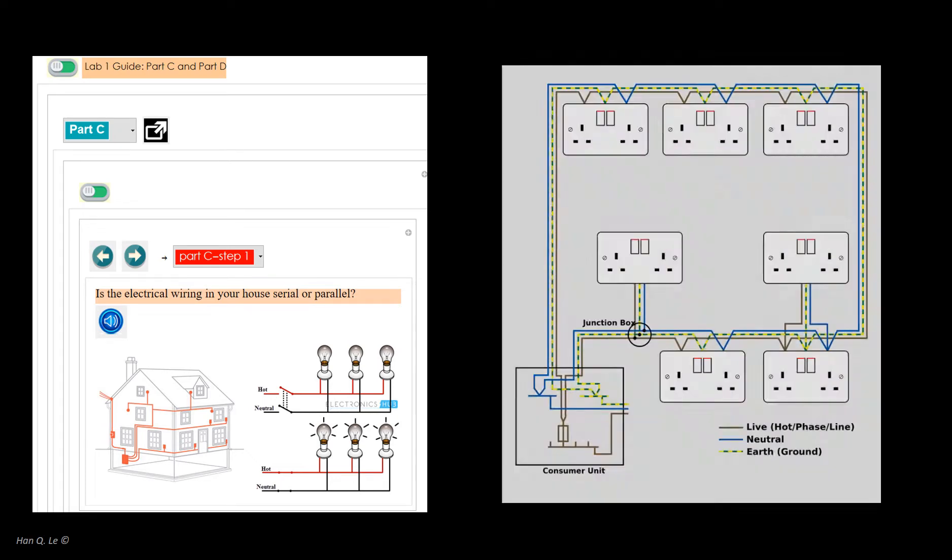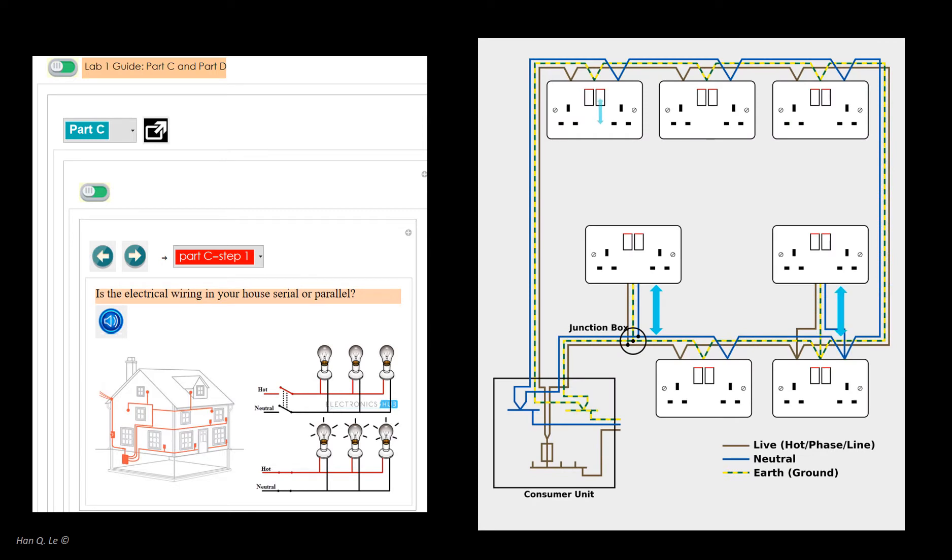Is the typical household wiring serial or parallel? If it were serial, it would mean that if one appliance were switched off, everything in the same circuit would also be off. To turn on one appliance, everything would have to be turned on. This is not practical, hence the wiring in a household must be parallel.